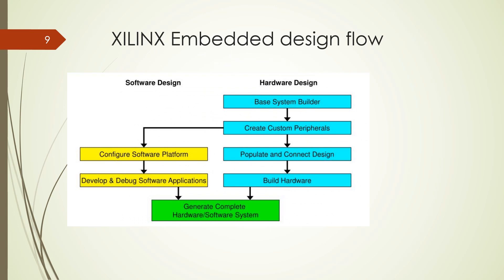The embedded design flow includes software design and hardware design. Hardware system design involves the hardware, and these are integrated to form the whole system. In the hardware system you have the base system, custom peripherals, and I/O peripherals. We then configure the software platform, develop and debug the software applications, and finally incorporate everything to generate the complete hardware and software system.